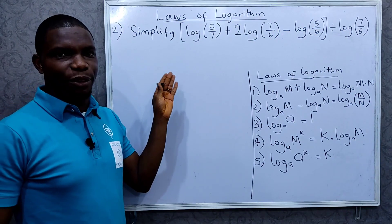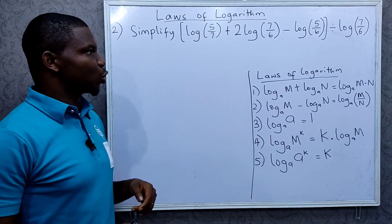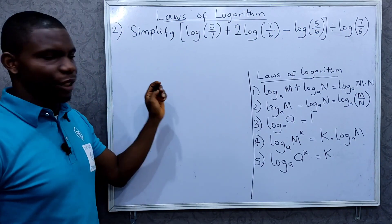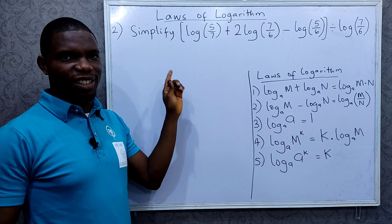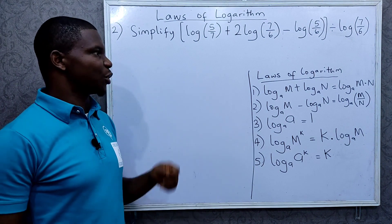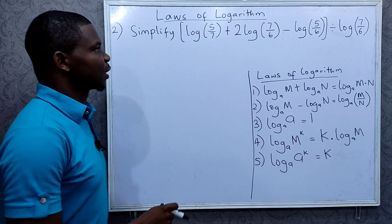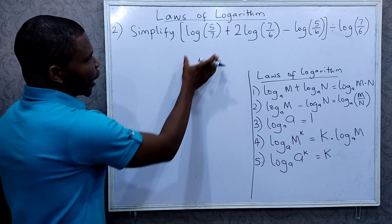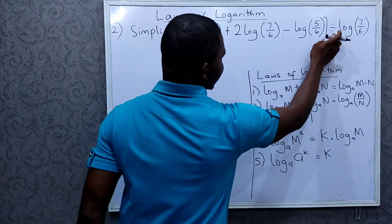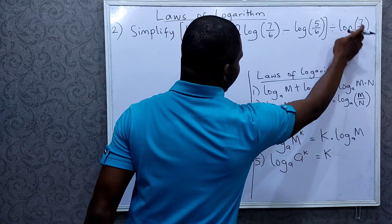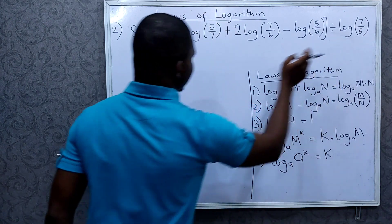Now we have example 2. You can pause this video and give this question a try and see what you get. We have all these expressions in brackets divided by log of 7 over 6.